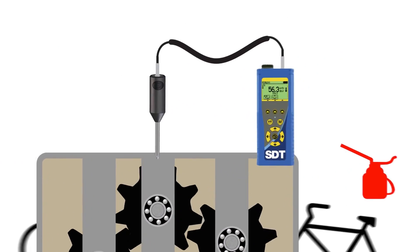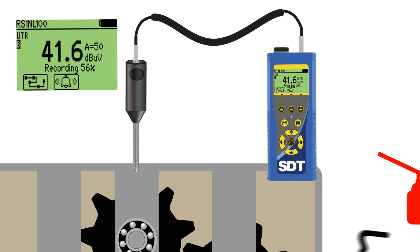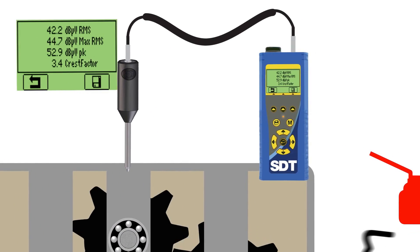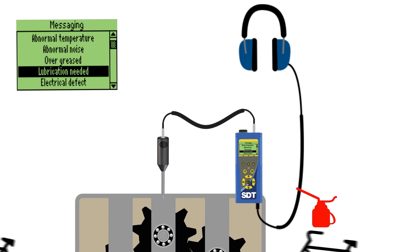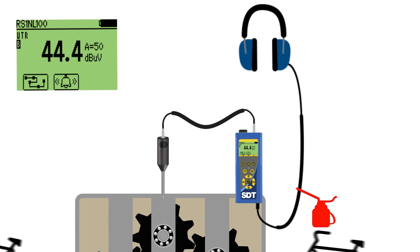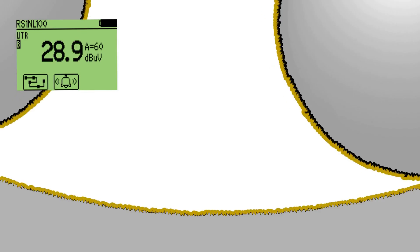Measuring friction levels requires the accuracy and repeatability of the digital SDT270 ultrasonic data collector. Whether predicting greasing intervals or actually applying new lubricant, depend on the precision of SDT's digital decibel display to avoid over and under lubrication.